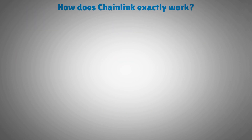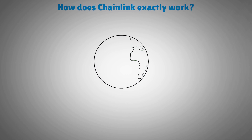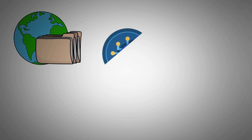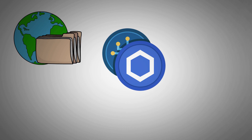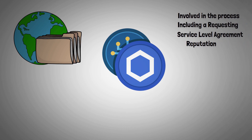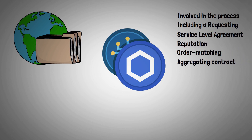How does Chainlink exactly work? Chainlink is a system that connects smart contracts on a blockchain to real-world data. It does this by using oracles, which are nodes that collect and verify data. There are five types of Chainlink contracts involved in the process, including a requesting, service level agreement, reputation, order matching, and aggregating contract.